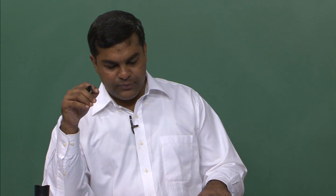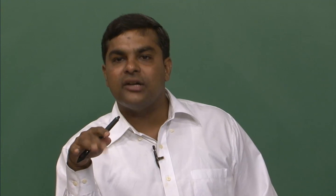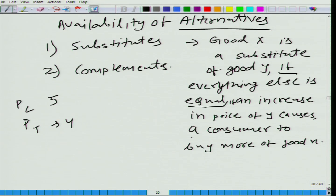An increase in price of coffee causes the consumer to buy more of good X — where good X is tea. The consumption of tea goes up because the price of coffee has increased, so coffee and tea are substitutes. Another close example: Pepsi and Coke are close substitutes. When priced equally some prefer Coke, some prefer Pepsi — there is an economic reason they tend to be priced equally, but that is a topic for another day.